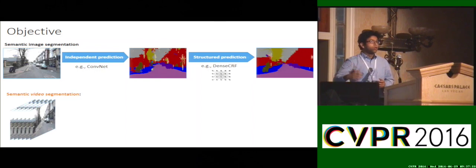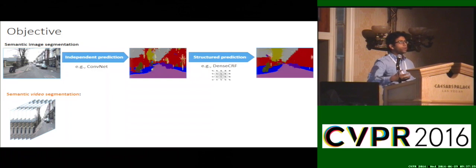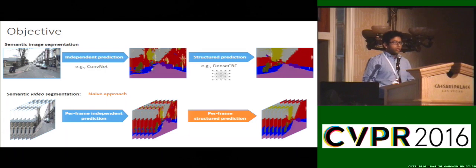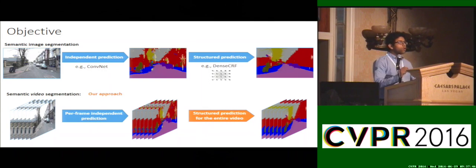But what if you have a video instead of just one single image? How should the pipeline look like? The simple naive way is to repeat the single image semantic segmentation pipeline for each image independently. You have per-image unaries and per-image structure prediction, but this is far from being optimal.